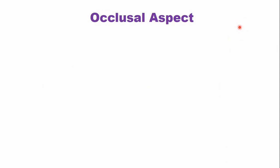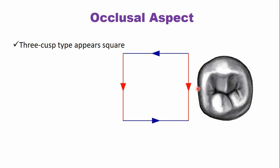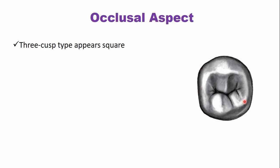The occlusal surface of the mandibular second premolar has two types. The three-cusp type is more common — with the buccal cusp, mesial lingual cusp, and distal lingual cusp — and this type appears more square. There is also a two-cusp type in which the distal lingual cusp is missing, making the tooth appear more oval in shape.